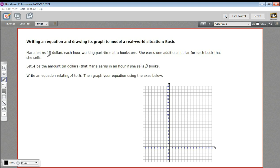It says Maria earns $10 for each hour working part-time at a bookstore, and she earns one additional dollar for each book that she sells. Let A be the amount in dollars that Maria earns in an hour if she sells B books. And then we have to write an equation and then graph it in this graph here.